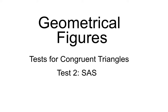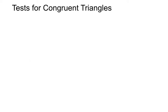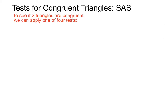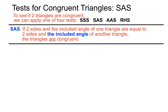Geometrical figures. We're looking at tests for congruent triangles. This is test two, known as SAS. To test for congruent triangles, we can apply one of four tests. We've seen a video on SSS. This one's on SAS. There's also another test called AAS and another one called RHS. Let's have a look at SAS.